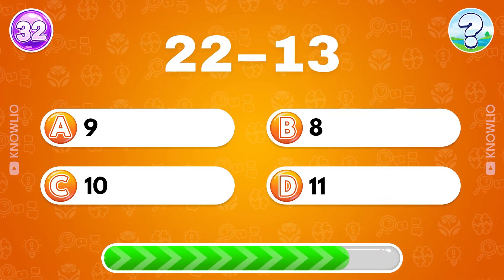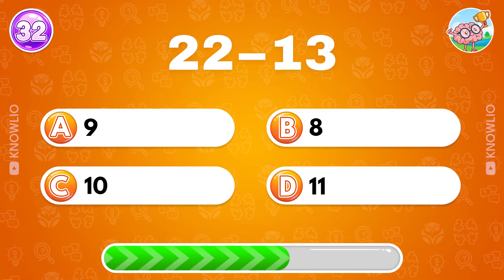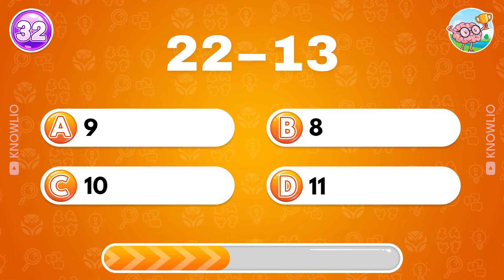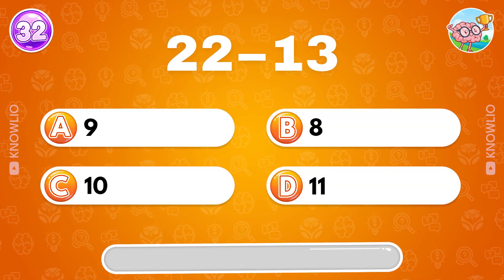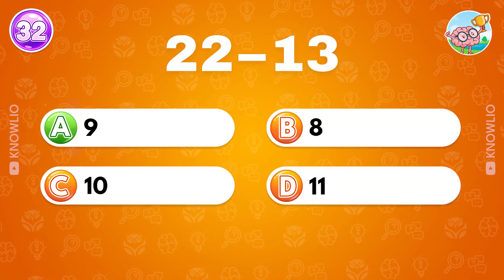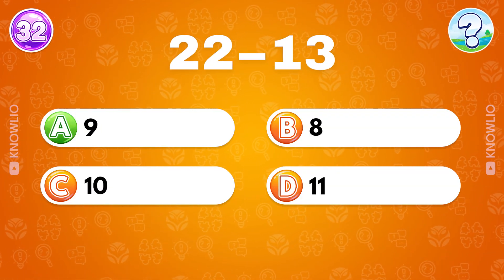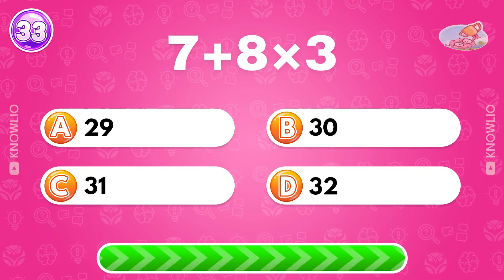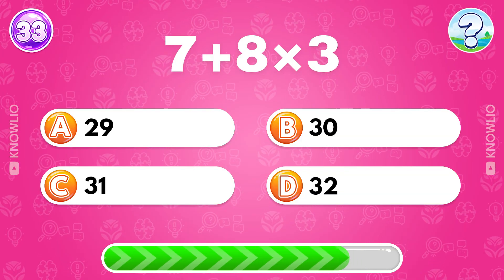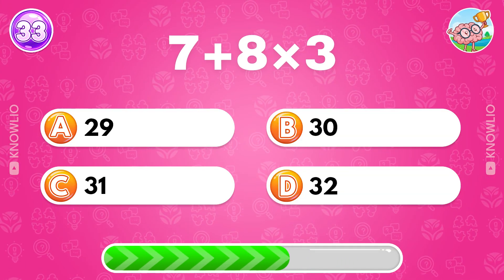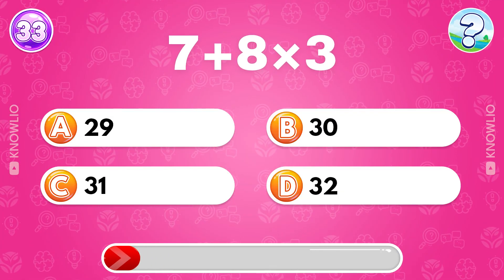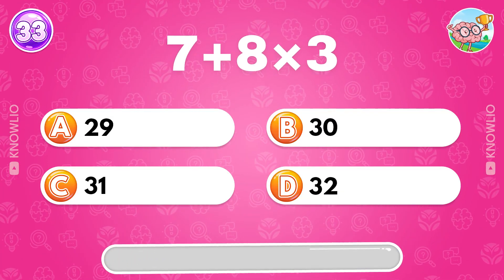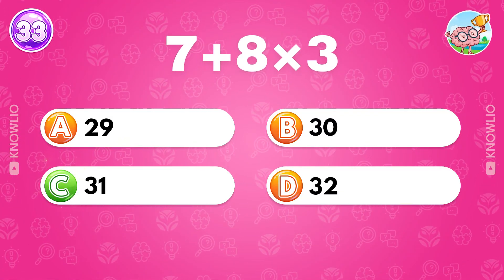What's the result of 22 minus 13? Answer A, 9. Hard one: 7 plus 8 multiplied by 3? Answer C, 31.